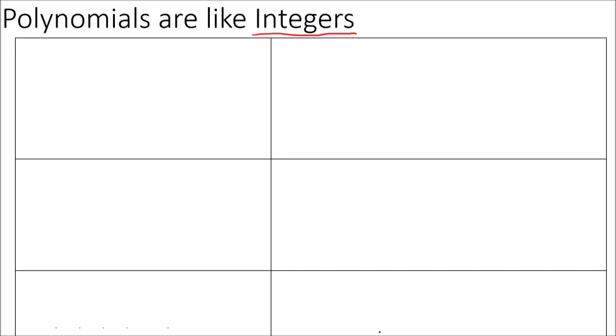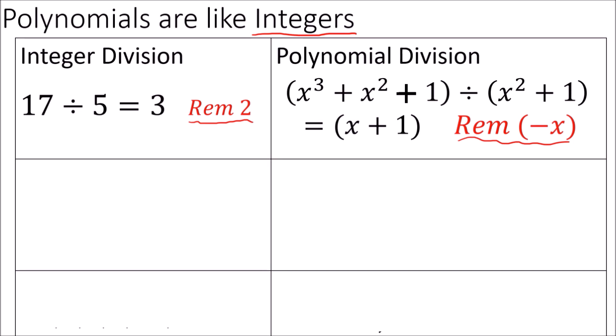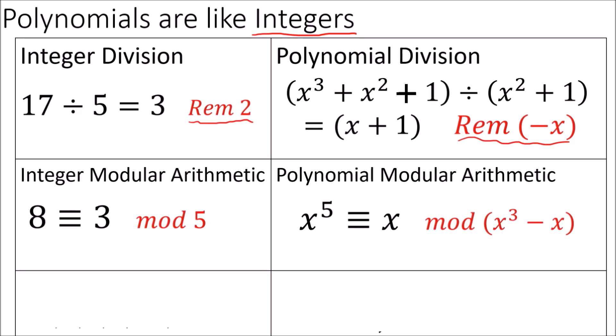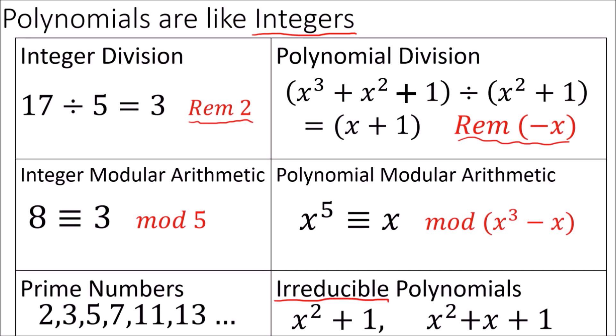We've learned all about polynomial arithmetic, division and remainder, modular arithmetic, and irreducibles. But what does all of this have to do with cyclic codes?